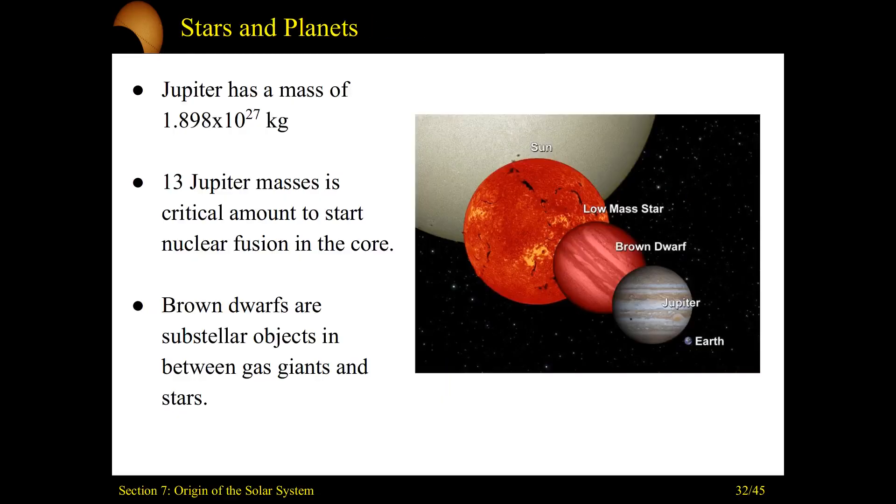Jupiter being the most massive planet in our solar system has a mass of 1.898 times 10 to the 27 kilograms. Now in terms of this range of scales, if Jupiter was about 13 times more massive, it would have had enough mass to reach that critical density to start nuclear fusion in the core.